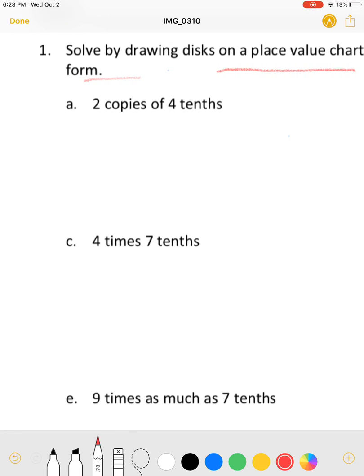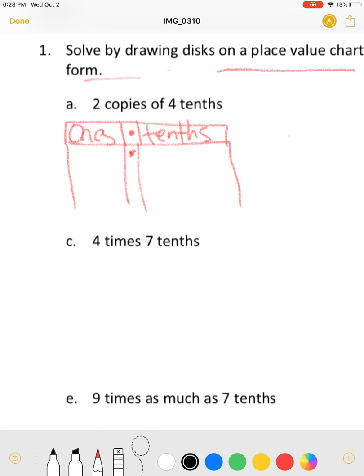One A says two copies of four tenths. We're going to use place value chart - I'm going to draw a place value chart here. Here would be my decimal, this would be the ones place, one place value to the left of the decimal. One place value to the right of the decimal is the tenths place. Our particular problem here says four copies of tenths - I mean I'm sorry four tenths, so this means that this is a four in the tenths place.